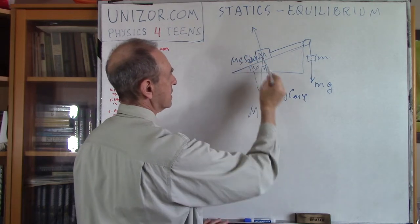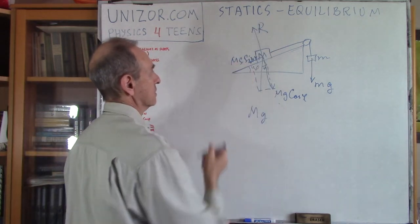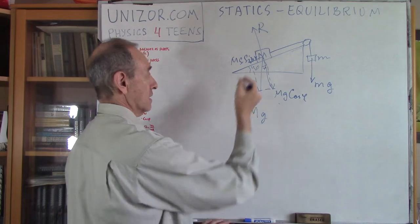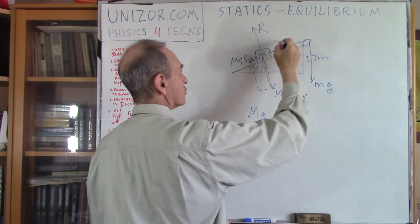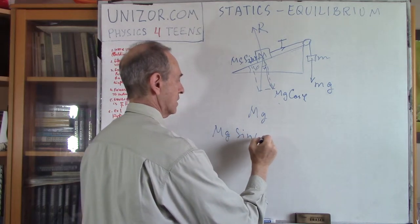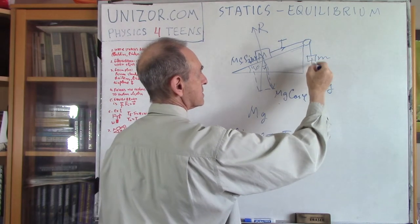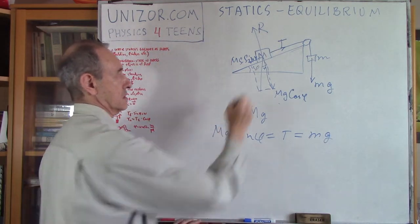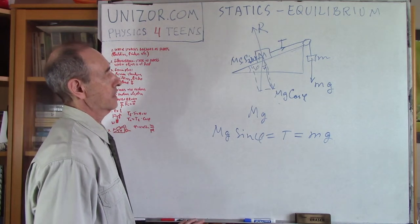So the Mg cosine phi is completely balanced by reaction of the force and this force which is Mg sine phi, since we are in balance, in equilibrium, is completely balanced by tension. So Mg sine phi is equal to tension. On the same hand the tension is balancing this force, it's the same tension. This is the same thread, the same tension, obviously we assume that there are no friction etc. and this is ideal, and this is ideal, all ideal conditions.